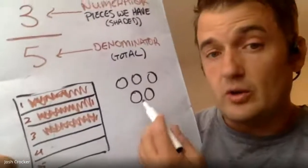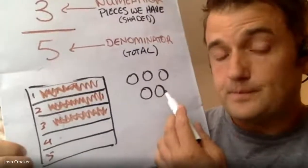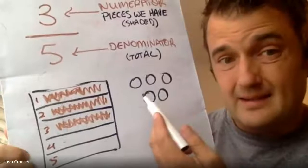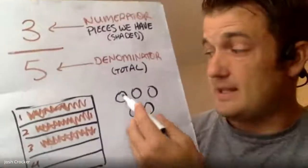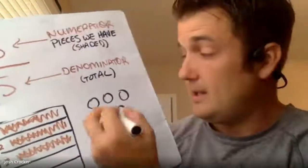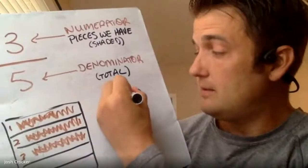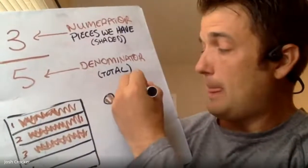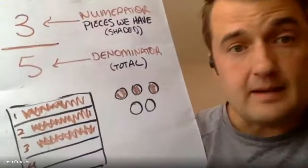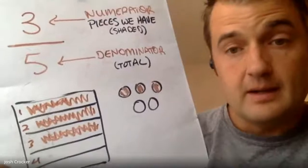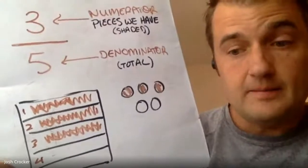You can also show it with a set. This is a set of five circles. If I wanted to color three-fifths, it would look like that — three out of five. This works with any fraction.